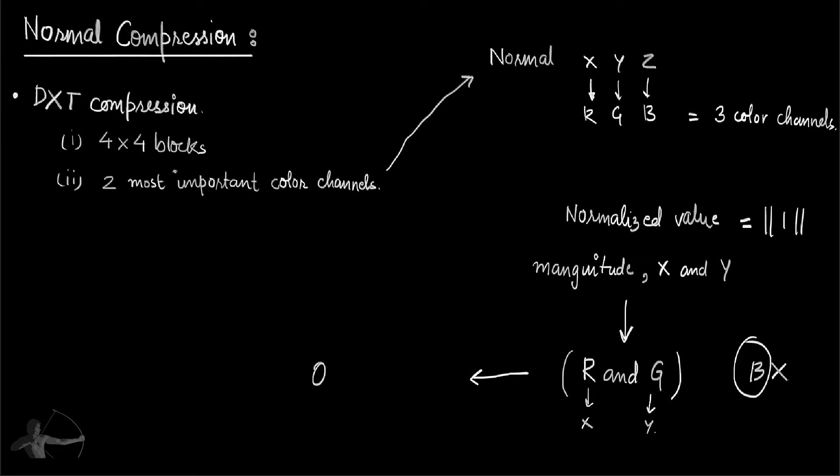So for the sake of quality, we have to get rid of one more color channel. How we can do that is we will use the green channel and we will shift the R channel to the alpha channel. So in that way, we will be dependent on only one color channel and one alpha channel.